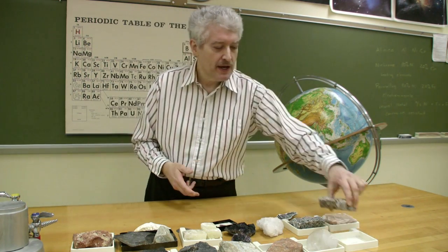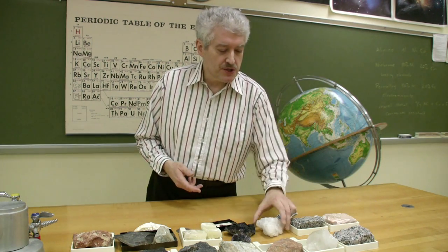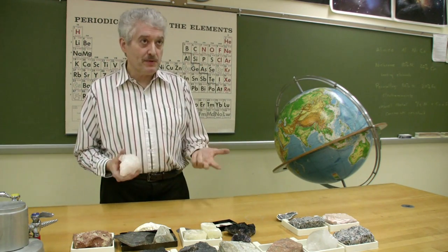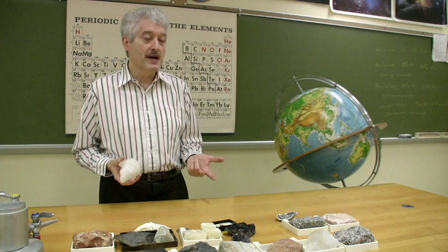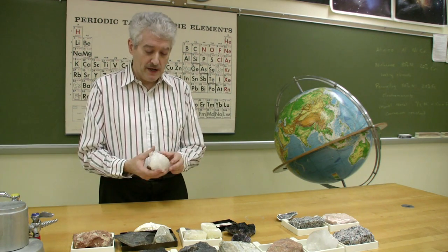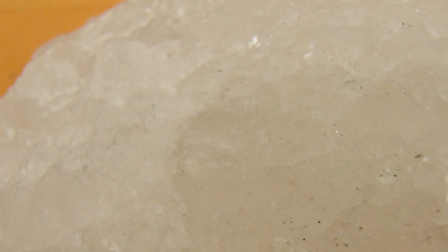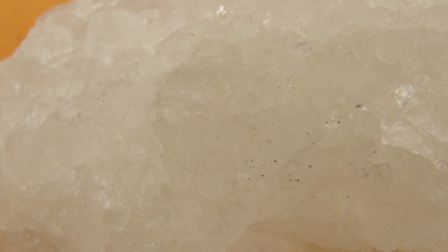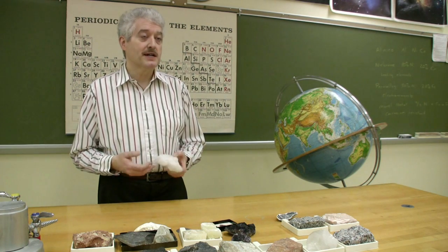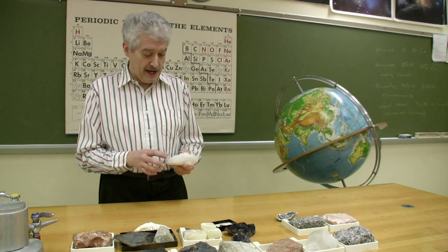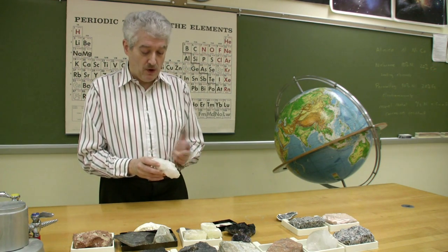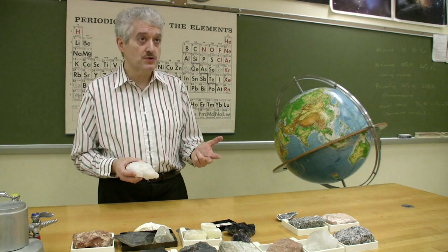A second way in which crystals form is from precipitation in liquid, as we already mentioned. We looked at fluorite a moment ago. Here's another example, rock salt. If we look at the oceans of the earth, about three and a half percent of the oceans by mass contains dissolved materials. And sodium chloride, ordinary table salt, is the one that's most abundant.